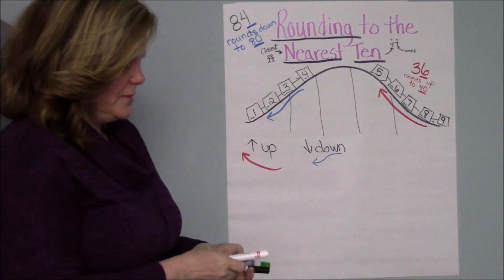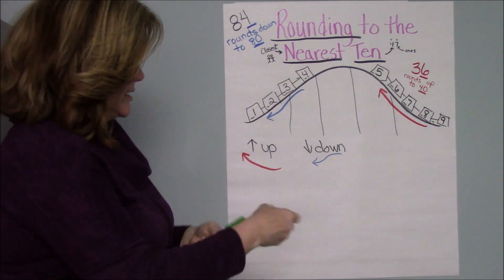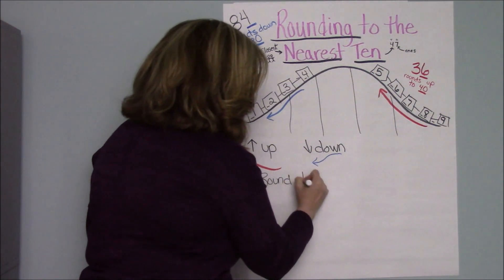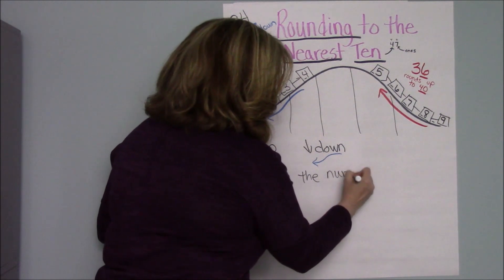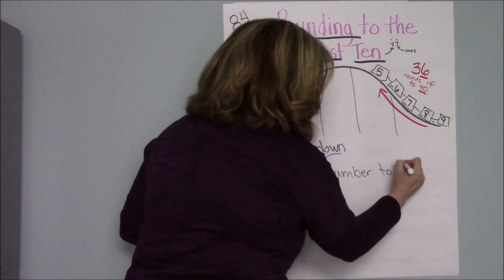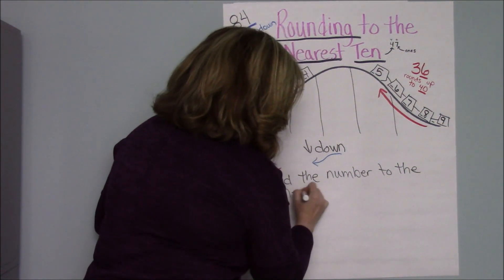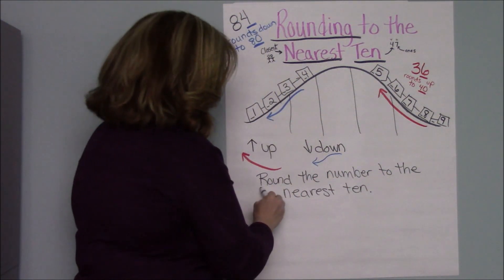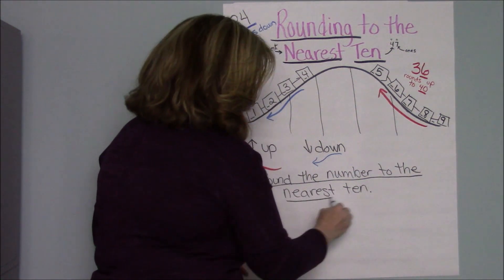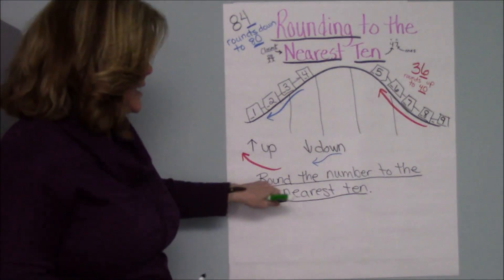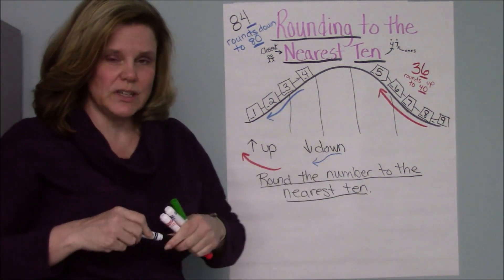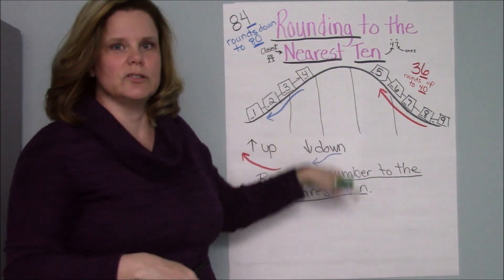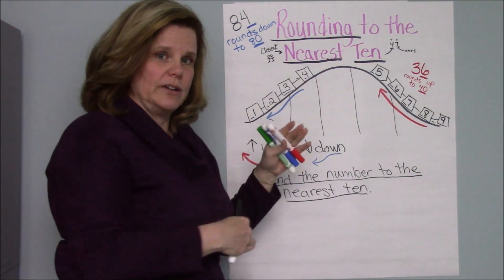So when we're talking about this, I'm going to give you the directions and I'm going to tell you, round the number to the nearest ten. That will be the direction that is on your homework or on your assessment. So when you see that question or you see that task, those directions, you know it means to plot your number on the roller coaster and decide if you're rounding up or rounding down.